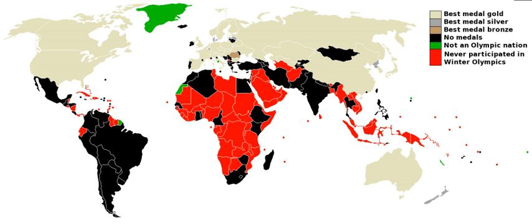Some early events, such as cricket at the 1900 Summer Olympics, had only two entrants. Retroactively awarding gold, silver, and bronze medals for the 1896 and 1900 Games results in some anomalies, such as the 100m freestyle swimming event in 1896 where no surviving records distinguish the places of those who finished between 3rd and 10th position.